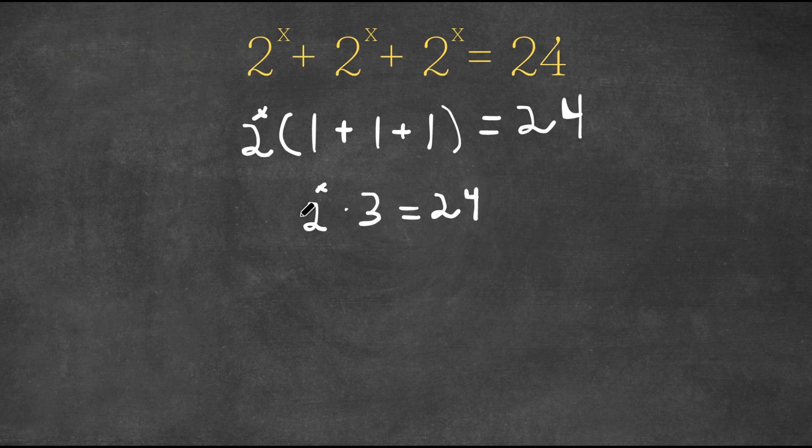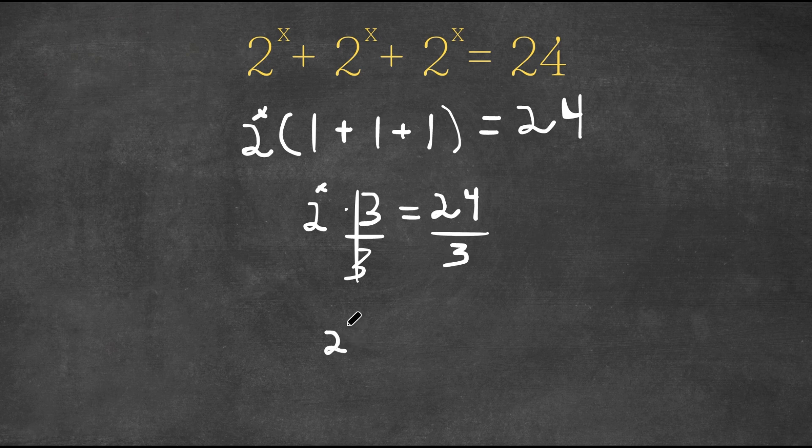Now I actually want to isolate this here, 2 to the power of x. So to do that, I'm going to divide by 3 on both sides to cancel out this 3. So if I divide by 3 on both sides, these two cancel out and I'm left with 2 to the power of x on the left hand side equal to 24 divided by 3 is 8.